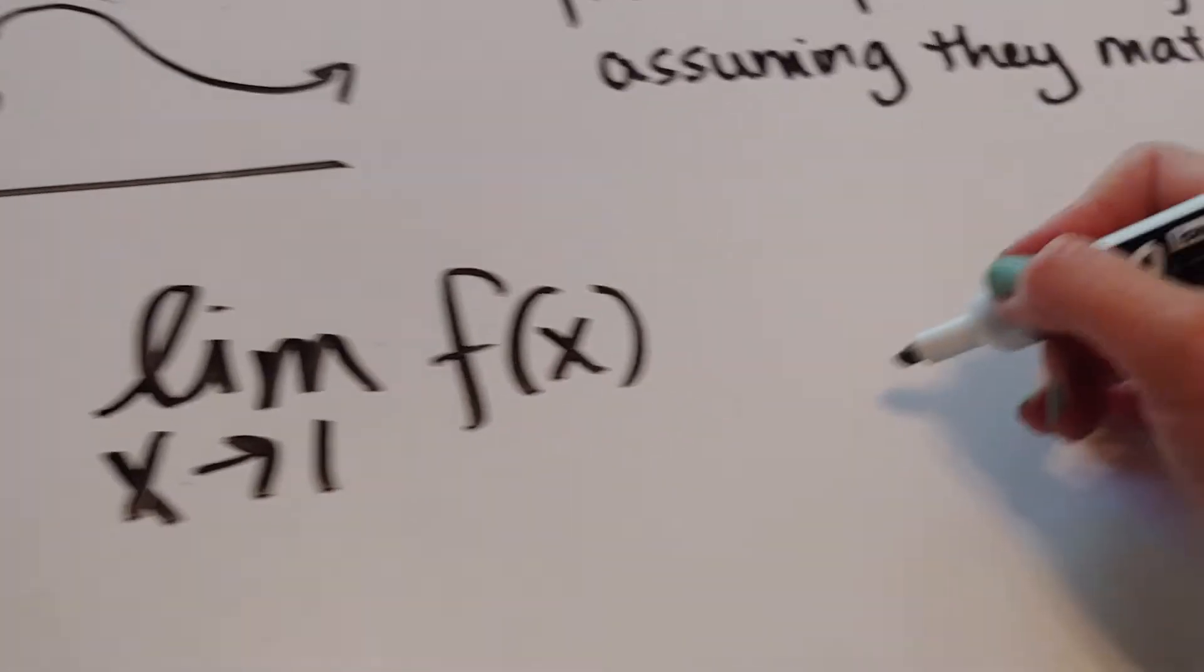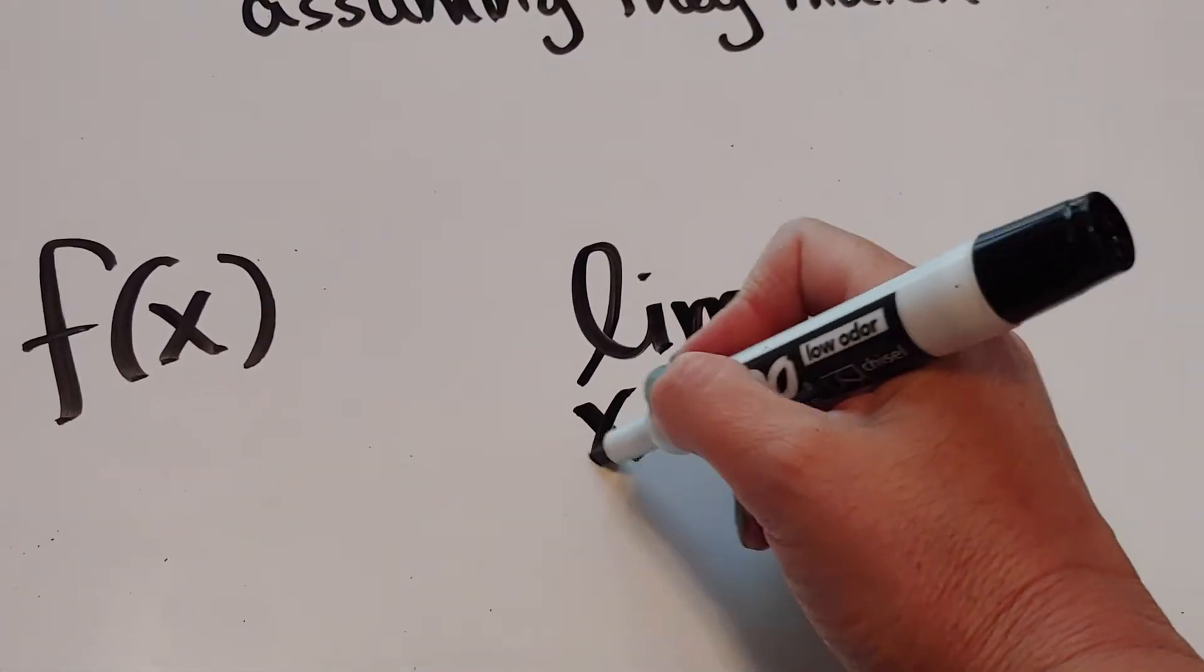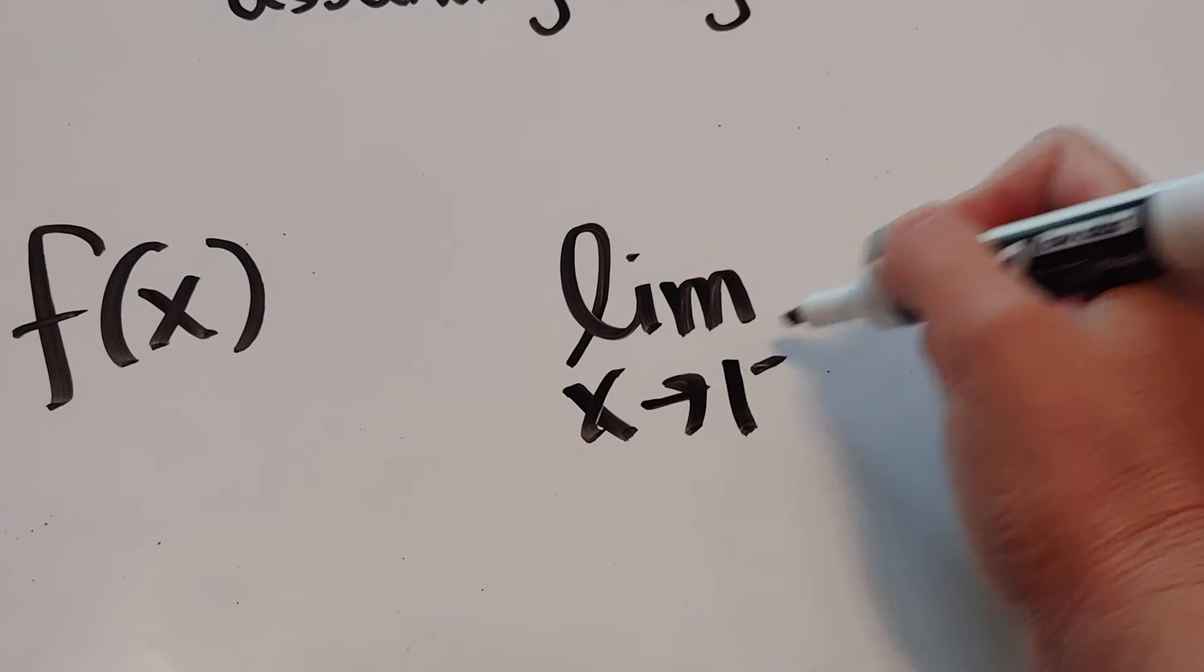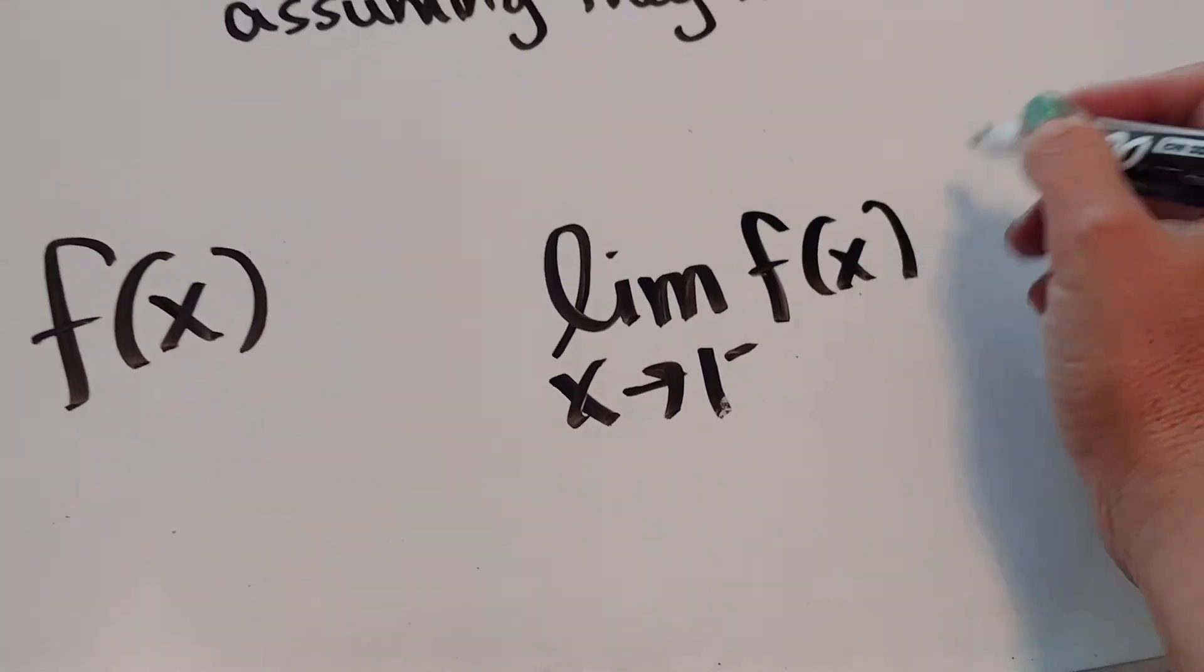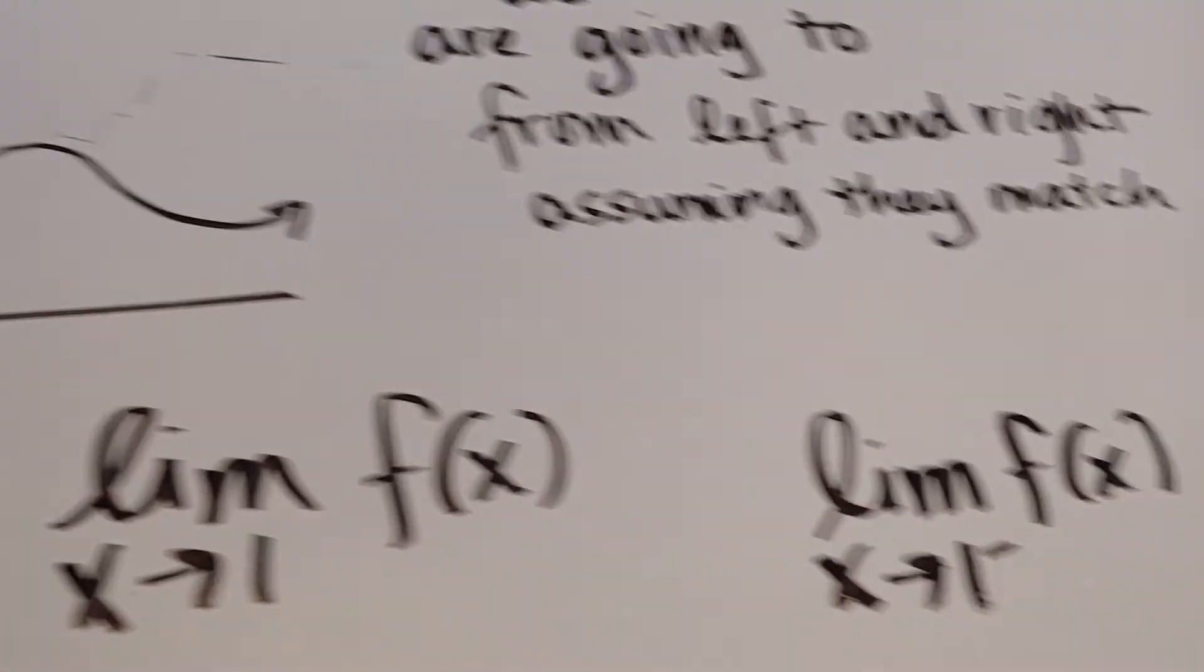And in fact, the way we write left and right is from the left, you write a minus sign because it's coming from the negative direction. So from the left, let's go back. From the left, we're going to a y value of 1.